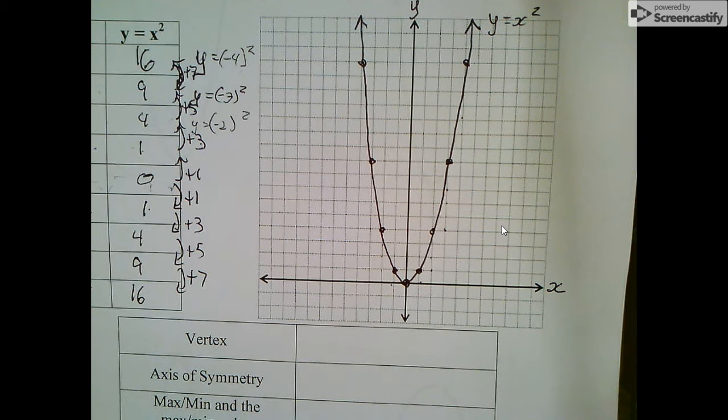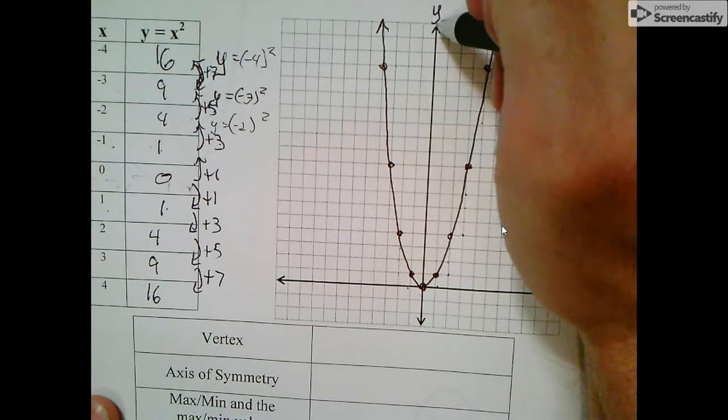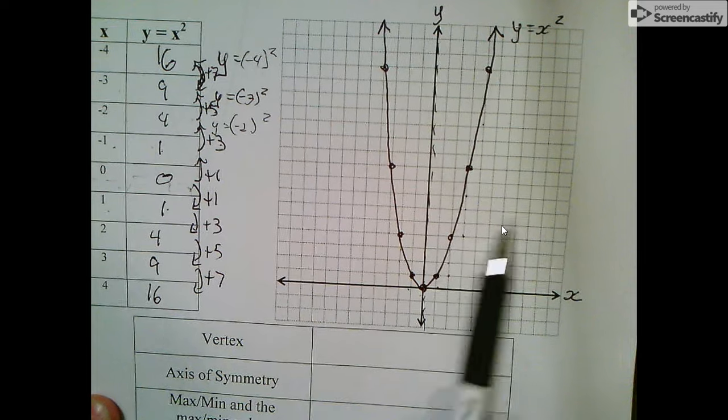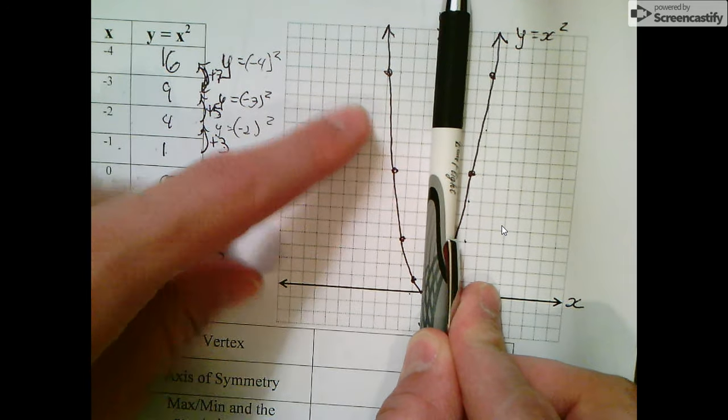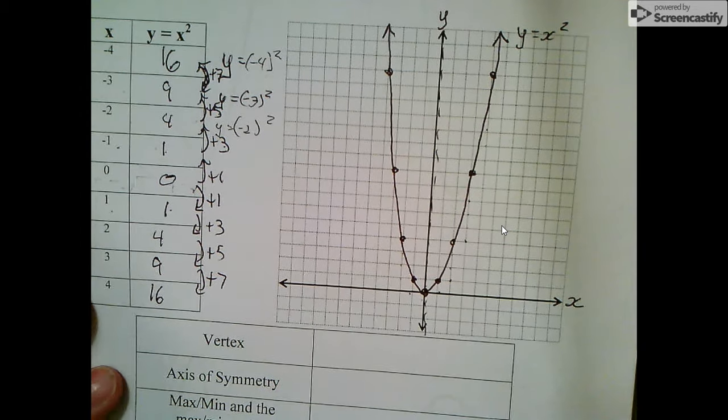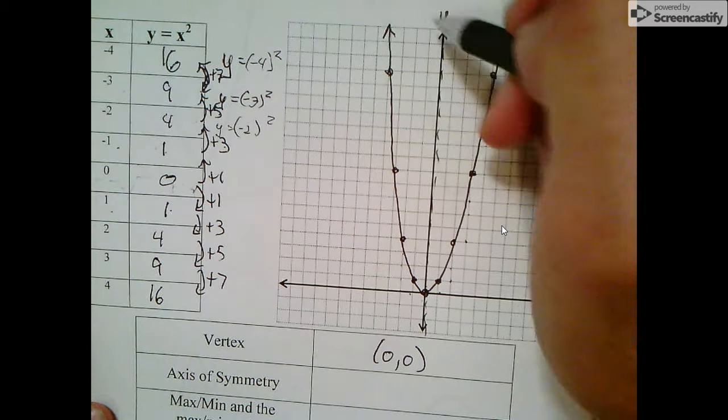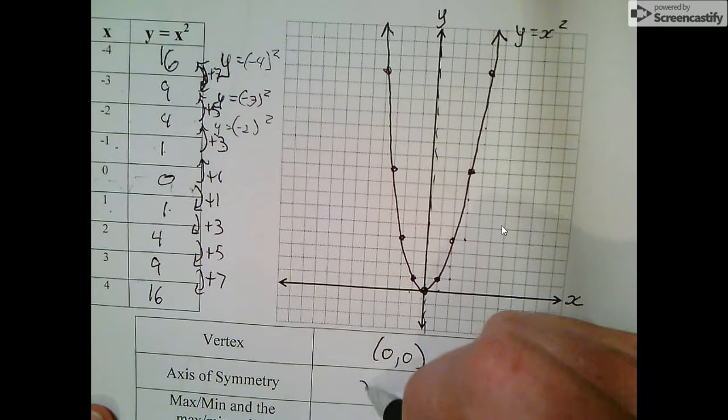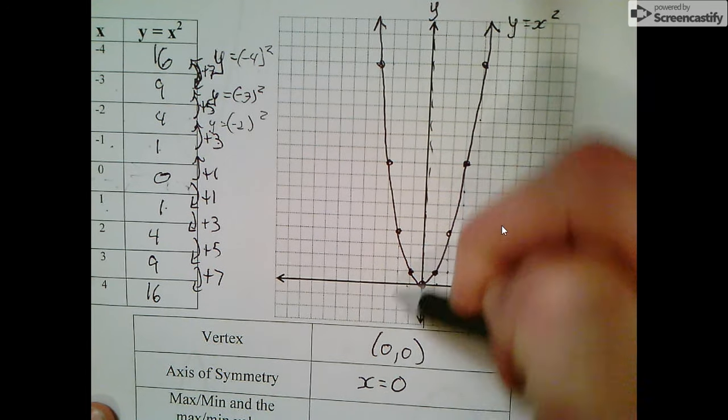Let's look at the features. The vertex is this bottom point, directly in the center at (0,0). There's a mirror line that runs down the middle. If we laid a mirror on this line, the left would look like the full graph still. The axis of symmetry is this line, and its equation is x equals 0.